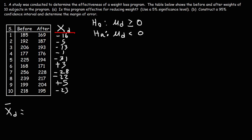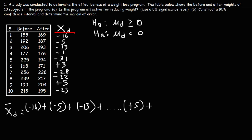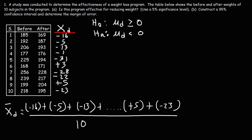We're going to take the average of the 10 difference values by adding them up and dividing by 10. The sample mean I got for the differences is negative 13.1.